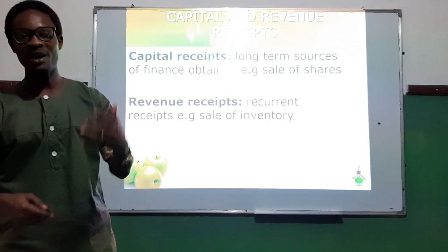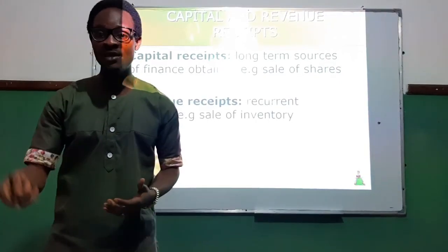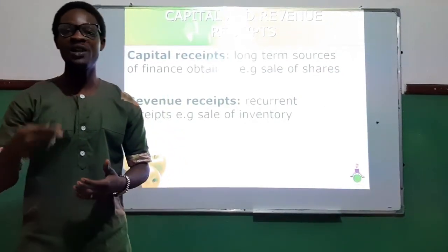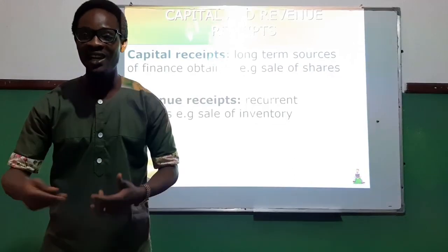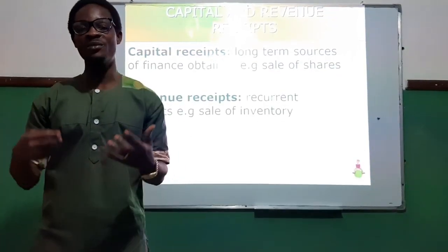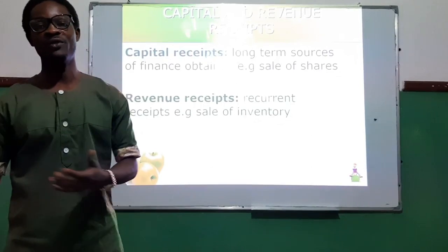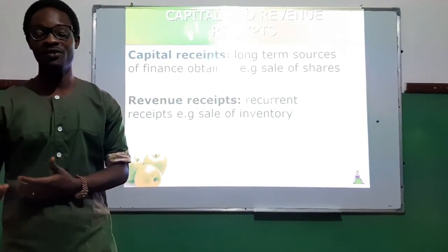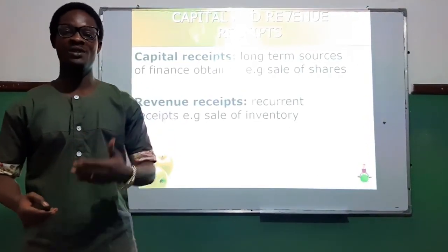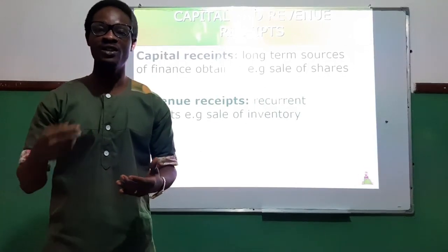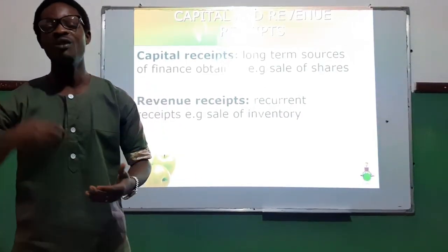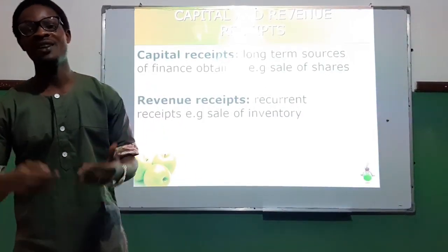Recap: capital expenditure is spending on long-term assets; revenue expenditure is spending on daily expenses. Capital receipt is obtaining a long-term source of finance like sale of shares, whereas revenue receipt is sale of inventory — sale of items done on a regular basis.